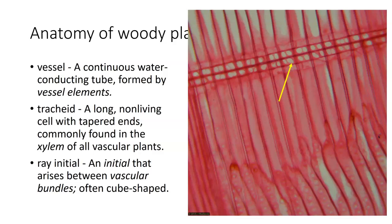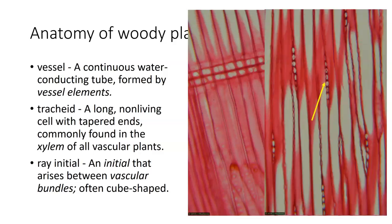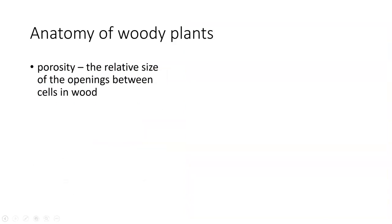The xylem itself is not living tissue. The xylem has lost its nucleus and everything else in order to be able to conduct the sap. The wood in this case was cut in a different manner from the one on the previous slide. When we look at porosity, we're looking at the relative size of the openings between the cells of wood. This is a way to classify wood, and it's very important to understand when you start working with wood.